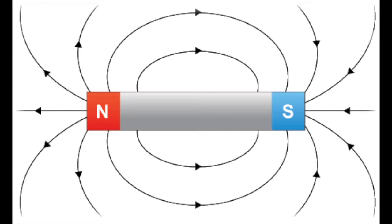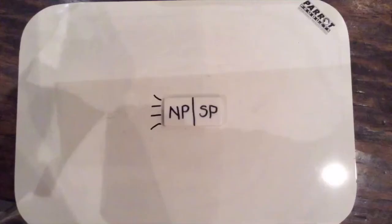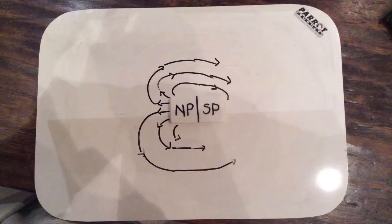Magnetic field lines help scientists predict how things would interact with magnets. They are an idea visualized. Magnetic field lines start from the North Pole and enter the South Pole.